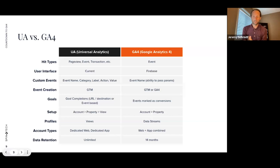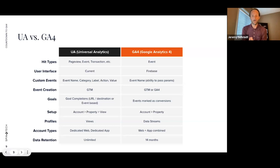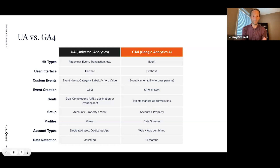The big thing to remember from today is events. Universal Analytics has multiple hit types — page views, transactions, custom events. With Google Analytics 4, everything that comes into the platform is recorded as an event. If you go to spinutech.com and hit the homepage, previously that was a page view hit type; in GA4 it's an event classified as a page view. This is a big reason why they're starting a new rendition — it's not an apples-to-apples comparison.